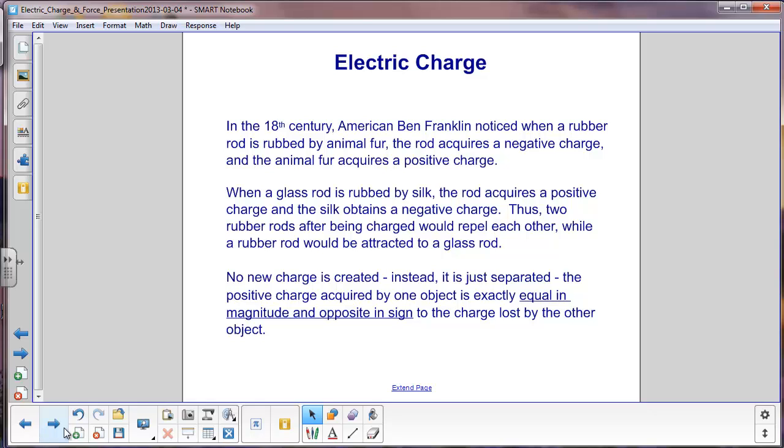It was left until late in the 18th century for Ben Franklin to set the convention for these two types of charges, arbitrarily calling the charge that is acquired by a rubber rod rubbed by fur negative and the charge that appears on the fur is positive. The important point is that no new charge is created. The charge gained by one object is equal in magnitude and opposite in sign to the charge lost by the second object.